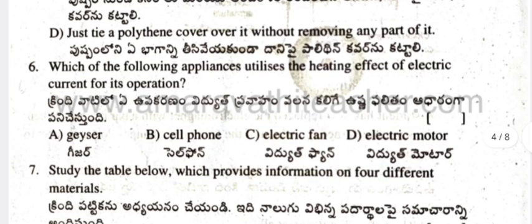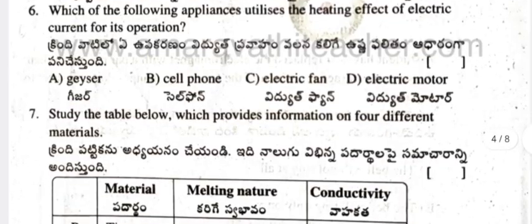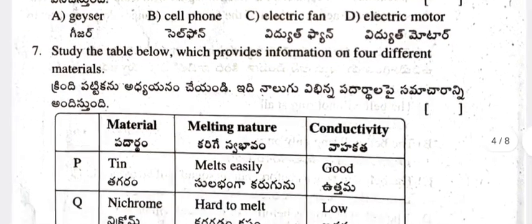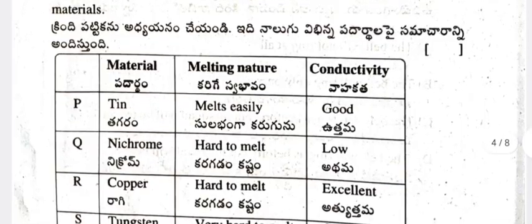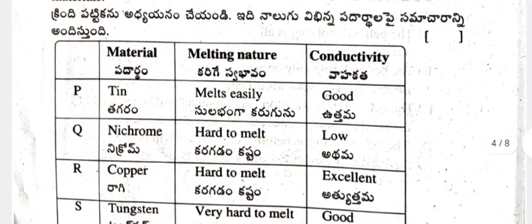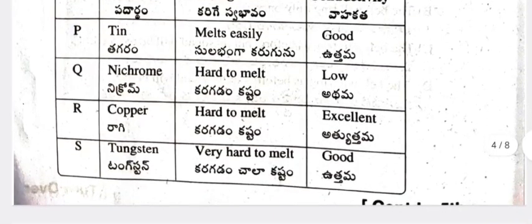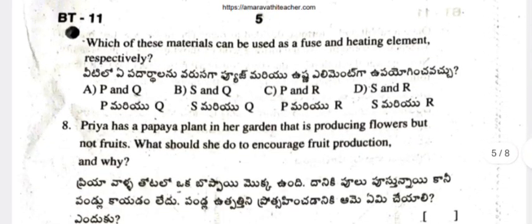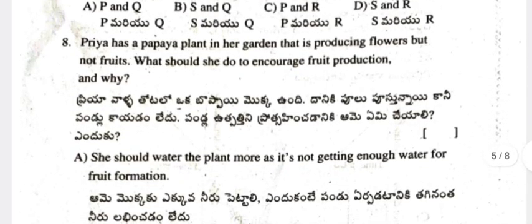Question 6: Which of the following appliances utilizes the heating effect of electric current? (a) Geyser, (b) Cell phone, (c) Electric fan, (d) Electric motor. Question 7: Study the table below on four different materials — P (tin): melts easily, good conductor; Q (chrome): hard to melt, low conductivity; R (copper): hard to melt, excellent conductivity; S (tungsten): very hard to melt, good conductivity. Which materials can be used as a fuse and heating element respectively?